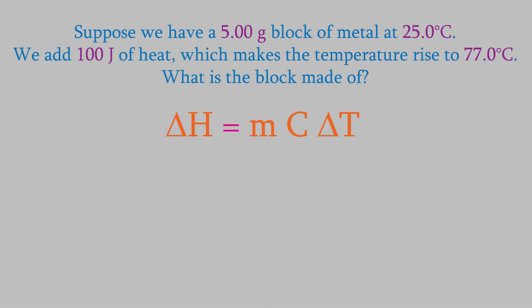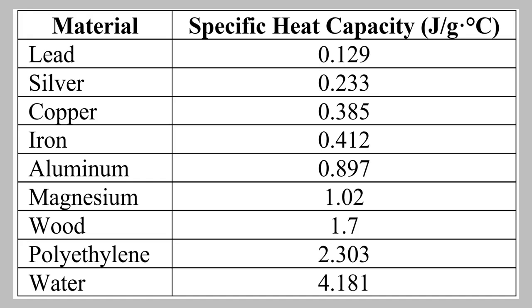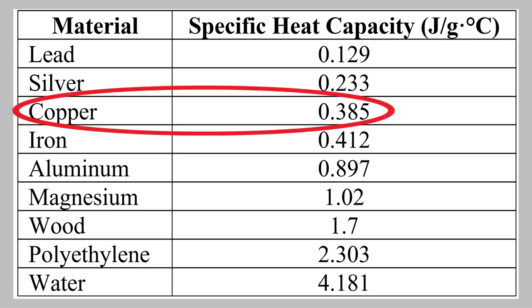We know that we added 100 joules of heat, so that's delta H, and we know that the mass is 5.00 grams. Our temperature went from 25.0 to 77.0 degrees, so delta T is 52.0 degrees Celsius. If we now solve for the specific heat capacity, we find that it's 0.385 joules per gram degrees C. If we look at our table of specific heat capacities, we'll find out that this metal is probably copper. I should mention that I don't expect you to memorize this table of specific heat capacities. I'll give you this data when you need it on a test or a quiz, and our textbook also has it if you need it for homework problems.